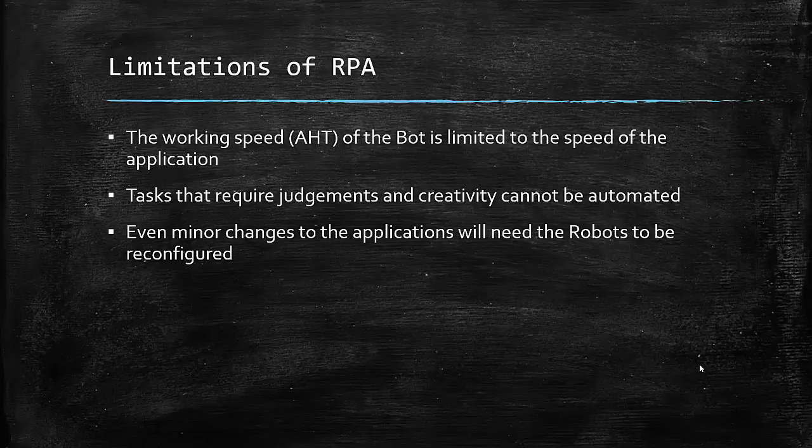For example, in our previous scenario, if the download speed of the PDF file is slow due to some network bandwidth issues, then there is nothing that the bot can do to make it faster, because the bot is going to use the same front end of the application to download the files. So it is going to take as long as it takes for a human user.